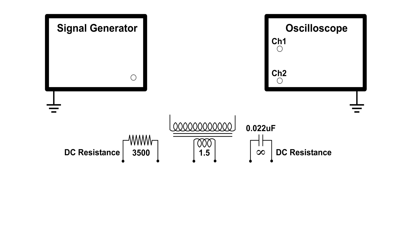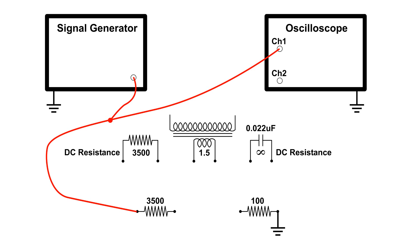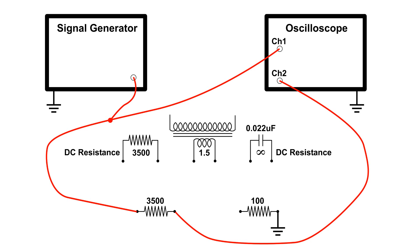I'm going to be using a signal generator and an oscilloscope. The circuit is going to consist of a 3500 ohm resistor and a 100 ohm resistor to ground, and the components are going to be connected between these two resistors. The oscilloscope is going to be connected with channel one and the signal generator on the left side of the 3500 ohm resistor. Channel two is going to be hooked up to the right side of the 3500 ohm resistor, and the first connection is going to be to our test resistor — our 3500 ohm resistor.